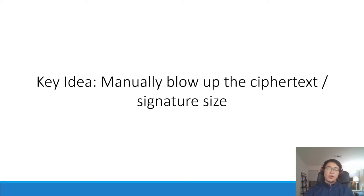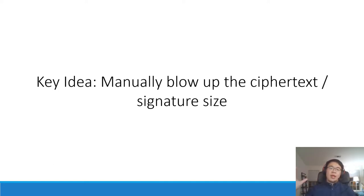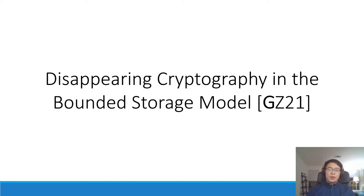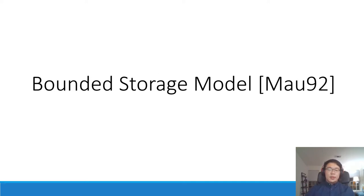So how do we achieve that the eavesdropper cannot store the ciphertext or signatures? The key idea is that we manually blow up a small message into a huge ciphertext or signature so that its size is too large for the eavesdropper to store. In fact, this idea was used in the previous paper by Guan and Zandry called Disappearing Cryptography in the Bounded Storage Model.